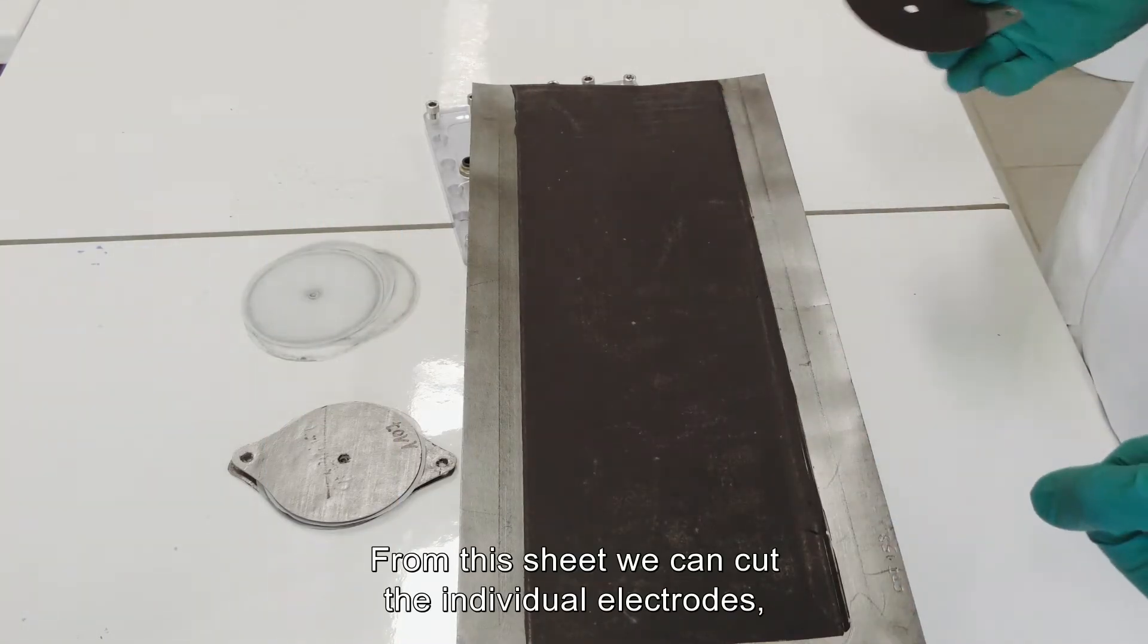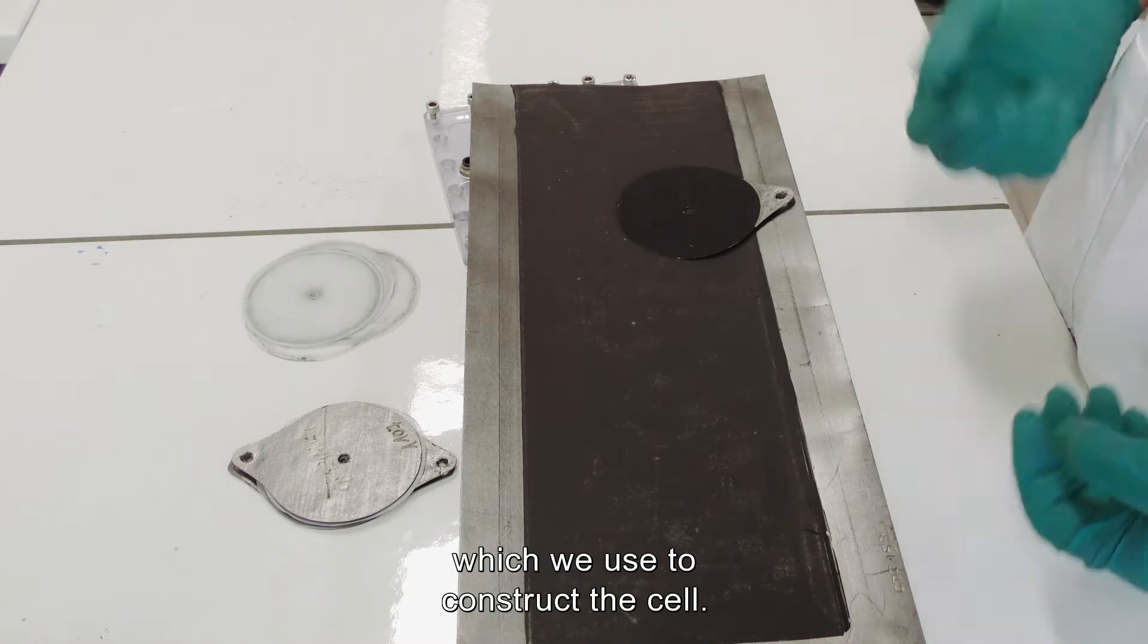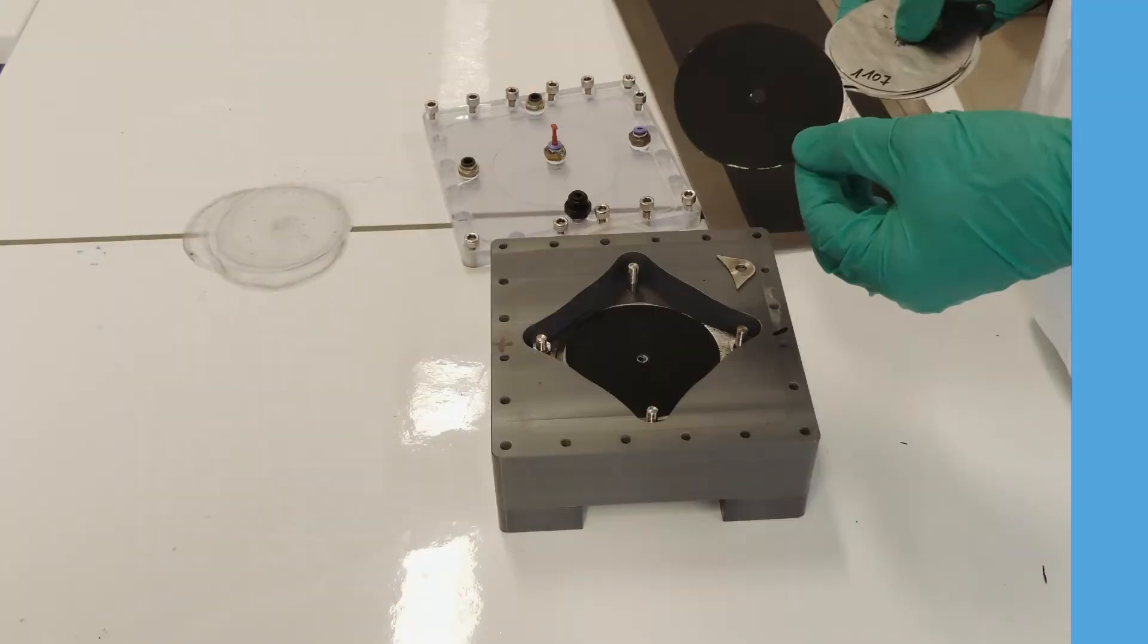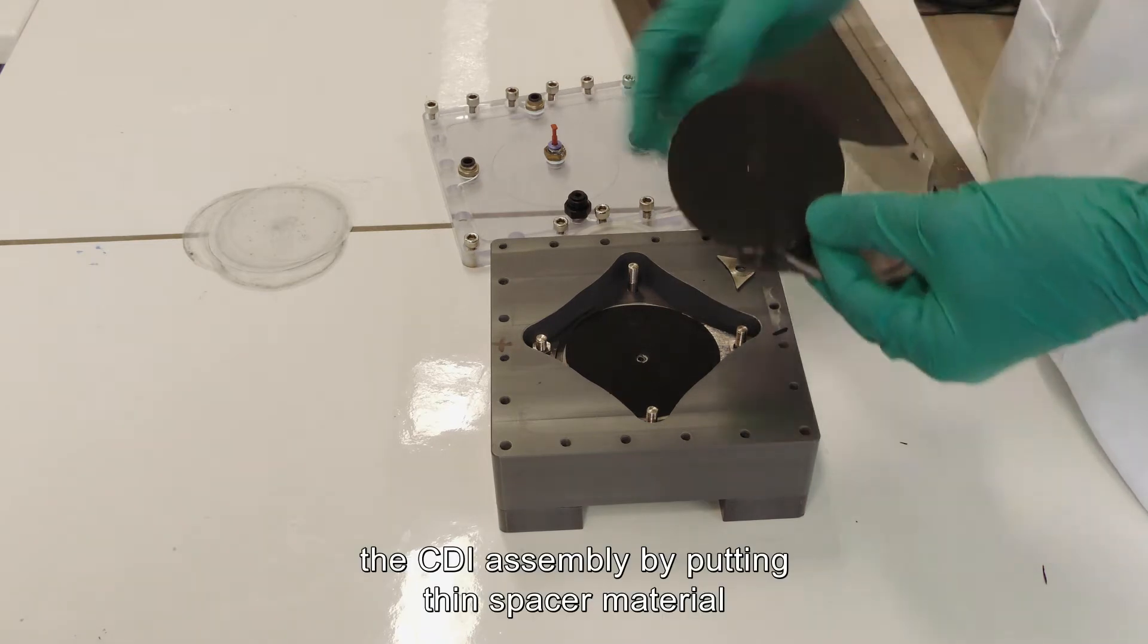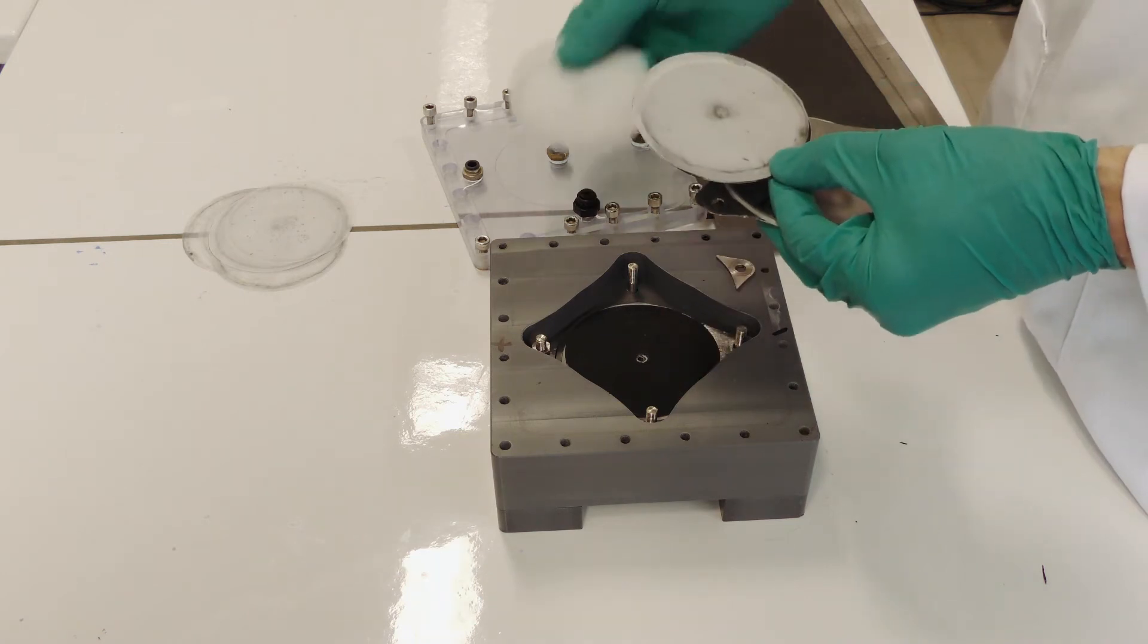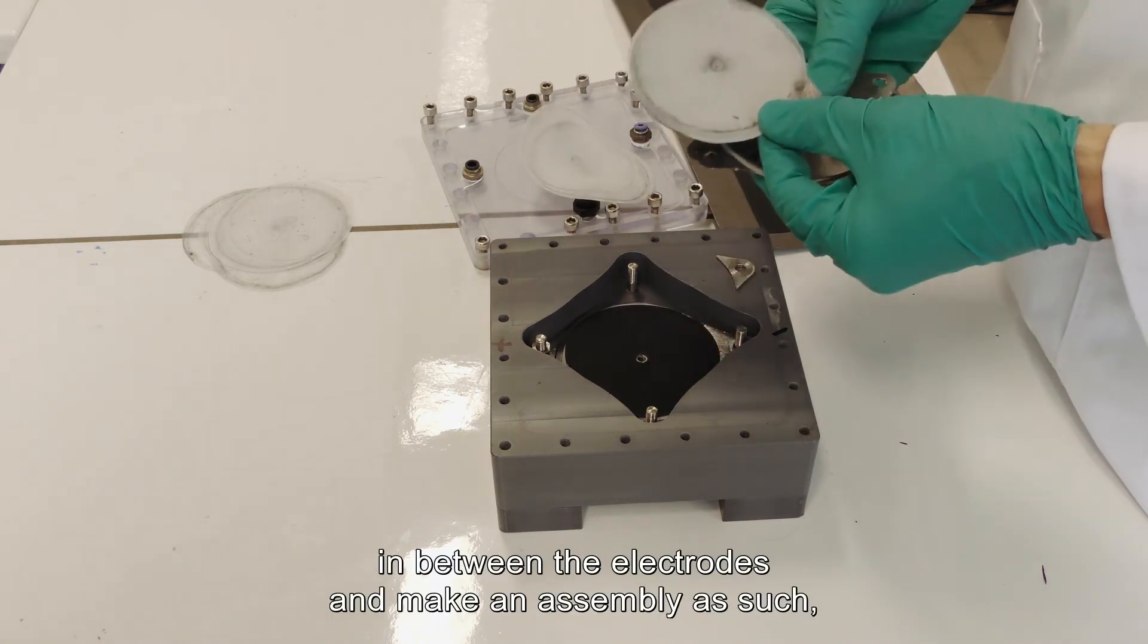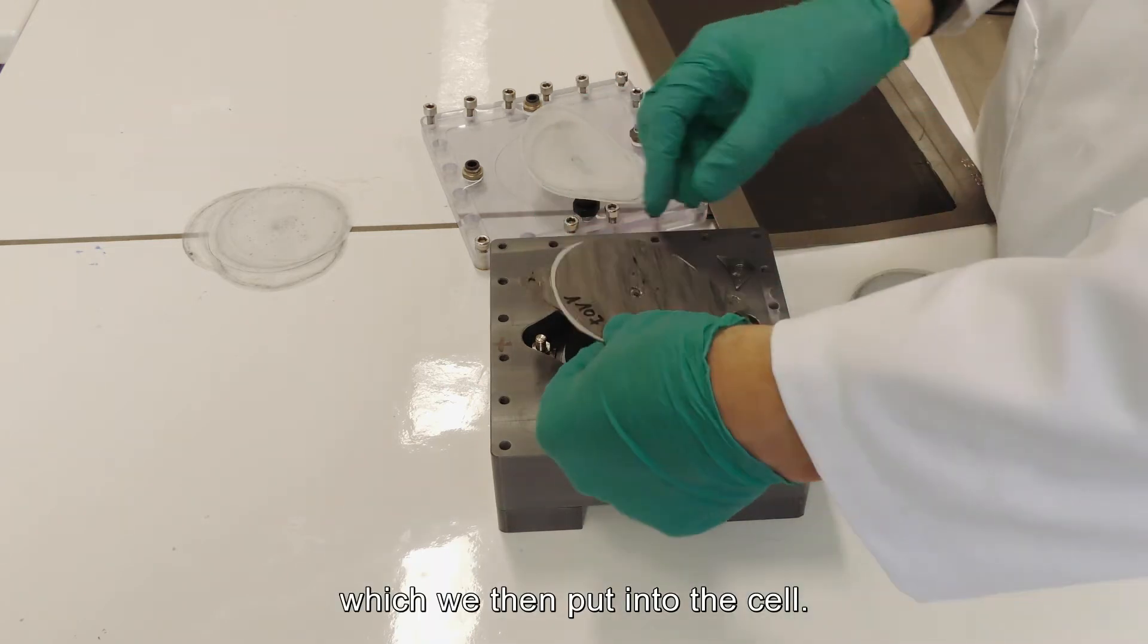From these sheets we can cut the individual electrodes which we use to construct the cell. Once the electrodes have been cut to shape, we can make the CDI assembly by putting thin spacer material in between the electrodes and make an assembly as such, which we then put into the cell.